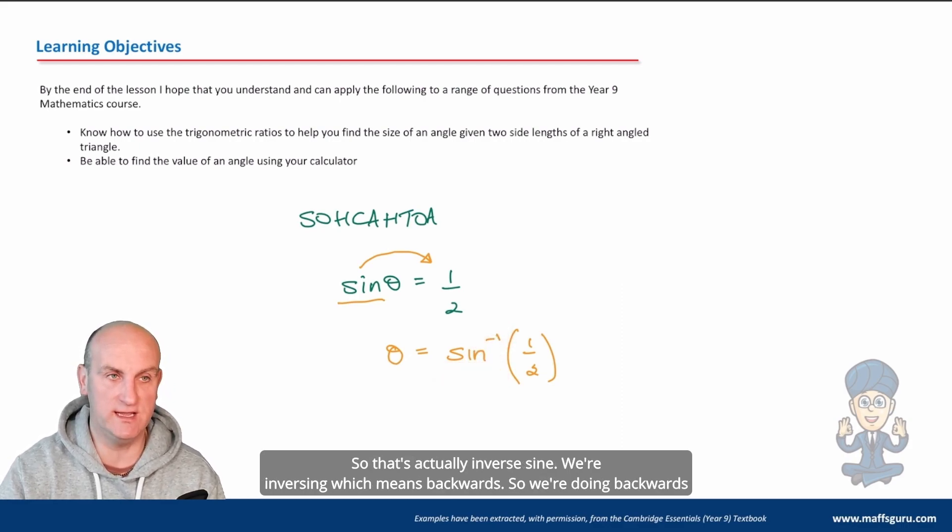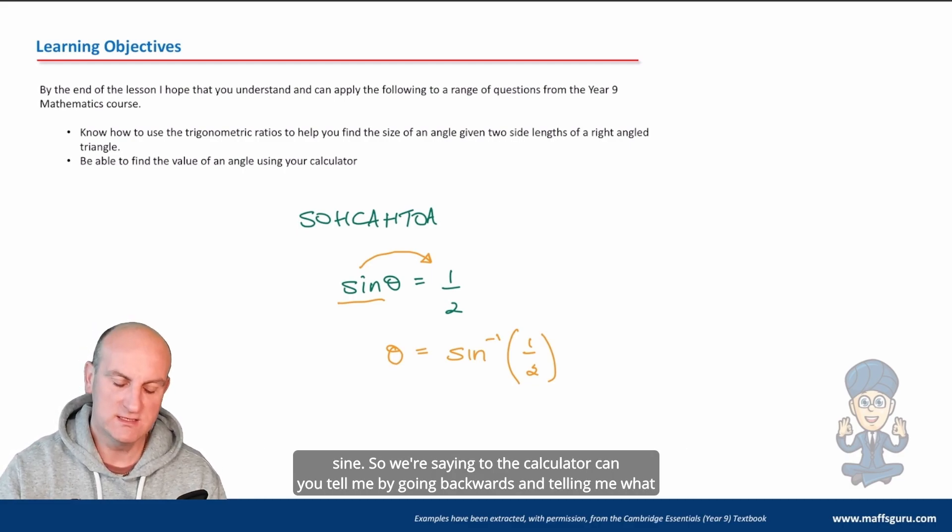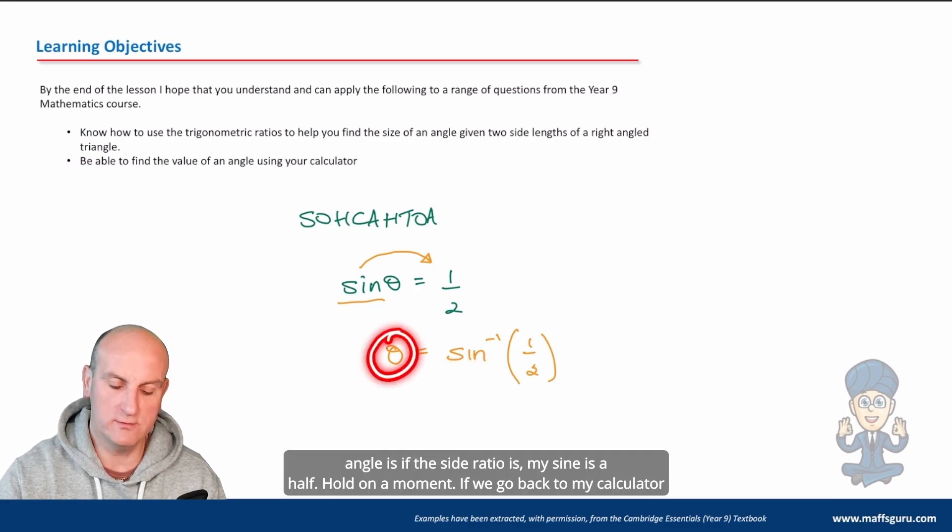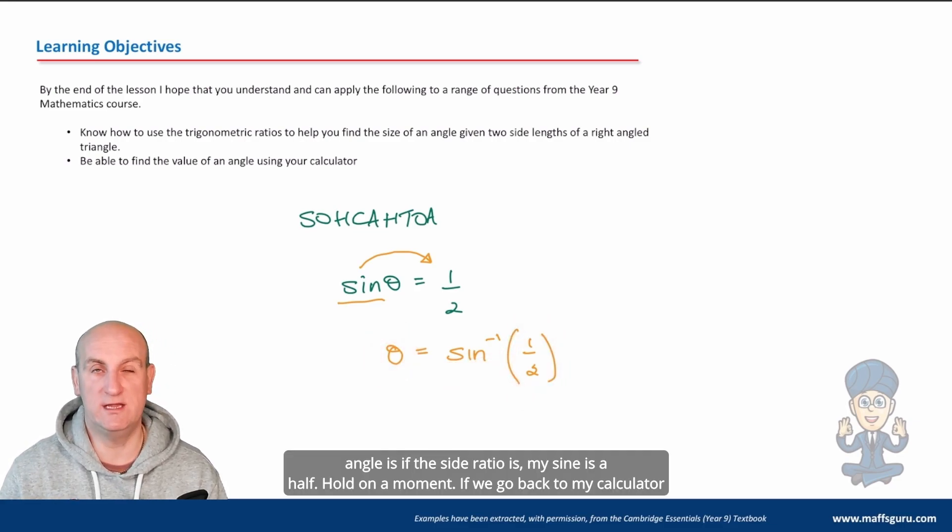So the sine changes to sine with a little floaty minus one. So that's actually inverse sine. We're inversing which means backwards. So we're doing backwards sine. So we're saying to the calculator, can you tell me, by going backwards and telling me what angle it is, if the side ratios of my sine is a half?